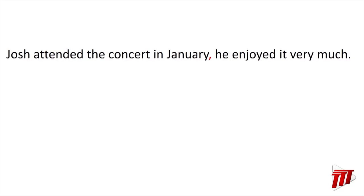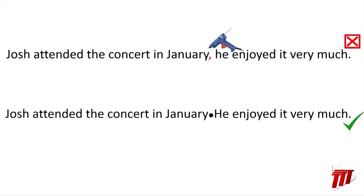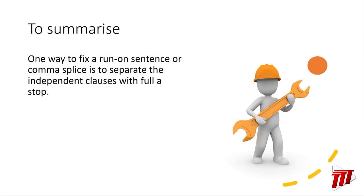Let's look at the other comma splice we explored earlier: "Josh attended the concert in January, he enjoyed it very much." That comma is not strong enough to separate the independent clauses. We fix it with a full stop: "Josh attended the concert in January." Full stop. "He enjoyed it very much." And that is the first way to fix a run-on sentence. To summarize: one way to fix a run-on sentence or a comma splice is to separate the independent clauses with a full stop. When you're in doubt, that's your first best bet.